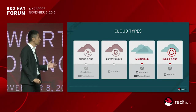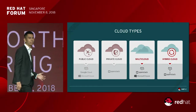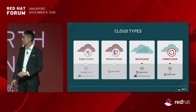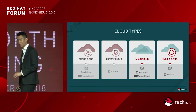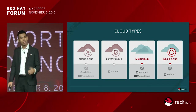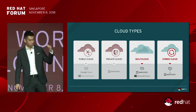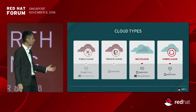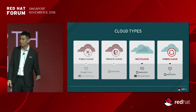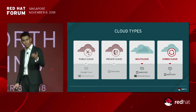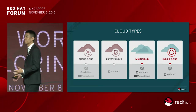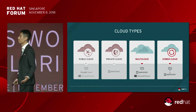Where are we today? If you look at the multiple cloud types that we have today, on the left side you have the public cloud providers — AWS, Google Cloud, or Microsoft Azure. The new kid on the block today is Alibaba, so we have Alibaba as part of the public cloud providers today.